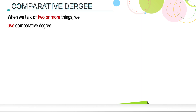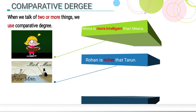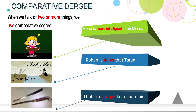Comparative degree is used when we compare two or more things or persons. Examples: 'Mona is more intelligent than Mina' — comparing two girls, more intelligent is comparative. 'Rohan is richer than Tarun' — richer is comparative, comparing two people. 'That is a sharper knife than this' — comparing two knives, sharper is comparative. So comparative degree is used when talking about two or more things.